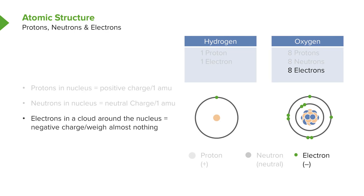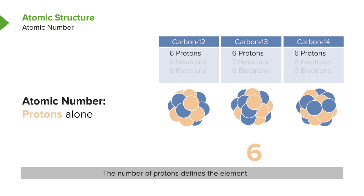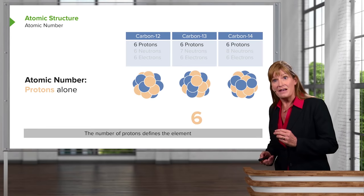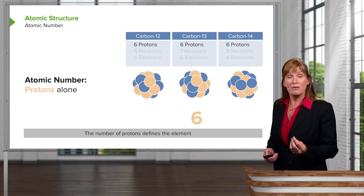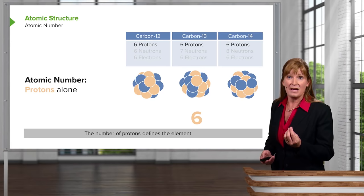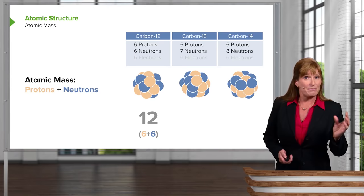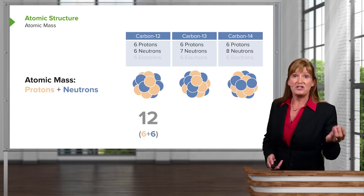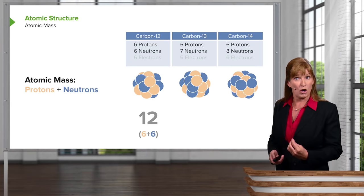Atomic number is what defines an element. Let's say we're looking at carbon — it has atomic number six, meaning it has six protons, and any atom with six protons is called carbon. We may see some variance in the number of neutrons and electrons. Atomic number is definitely defined by the number of protons, and that defines what the element is called. We also have atomic mass: when we add the protons and neutrons in the nucleus together, that gives us the atomic mass. Each of them is one atomic mass unit, and thus our atomic mass for standard carbon — the most prevalent form — is 12 atomic mass units.